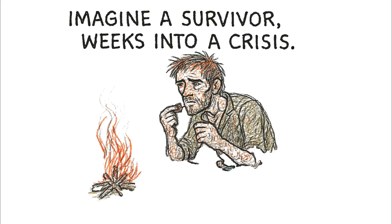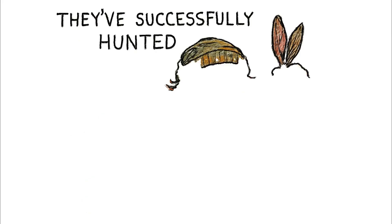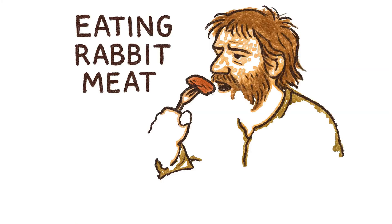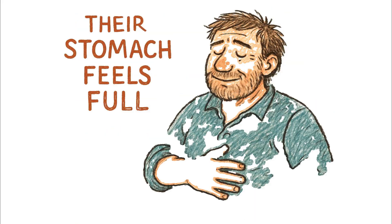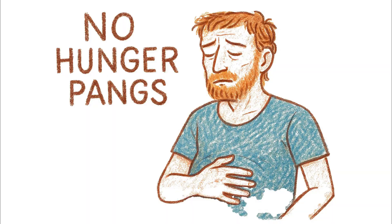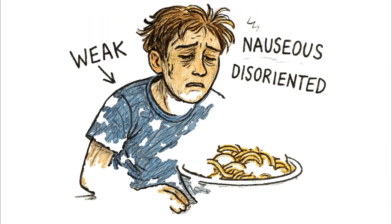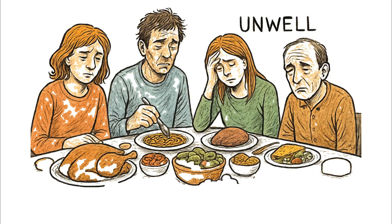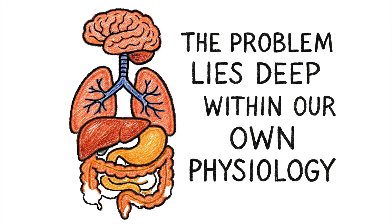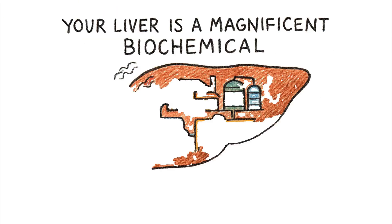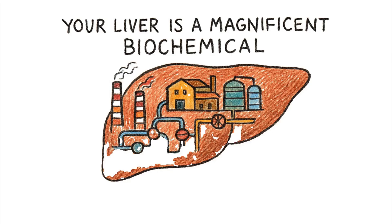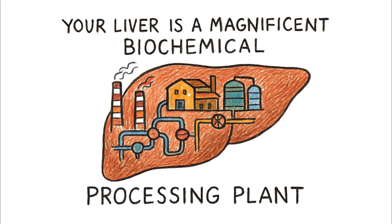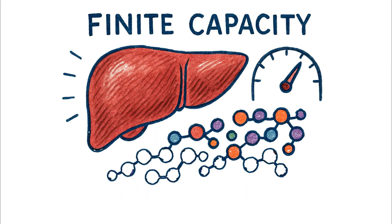Imagine a survivor, weeks into a crisis. They've successfully hunted. They're eating rabbit meat every day. Their stomach feels full. They don't have hunger pangs. Yet, they are getting weaker, nauseous, and disoriented. They are biologically starving to death despite eating what seems like a plentiful source of food. The problem lies deep within our own physiology. Your liver is a magnificent biochemical processing plant, but it operates under strict rules. It has a finite capacity for metabolizing protein.